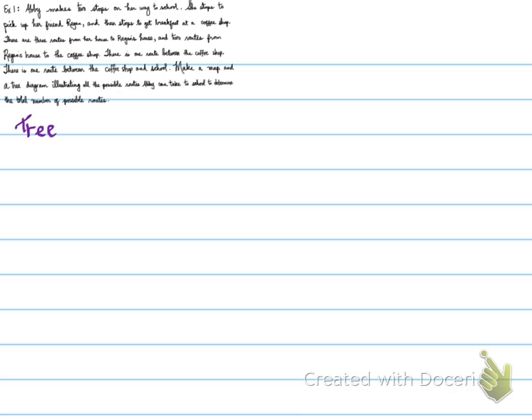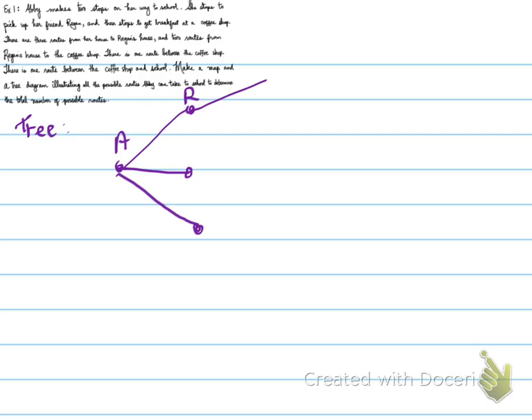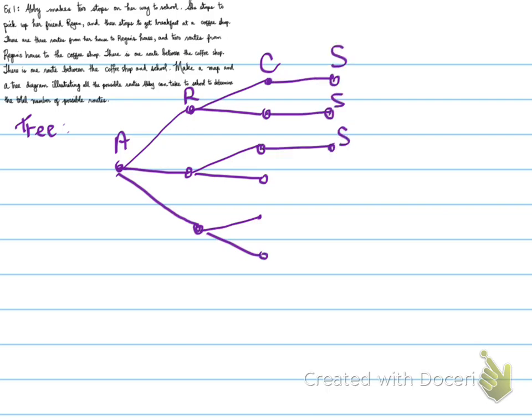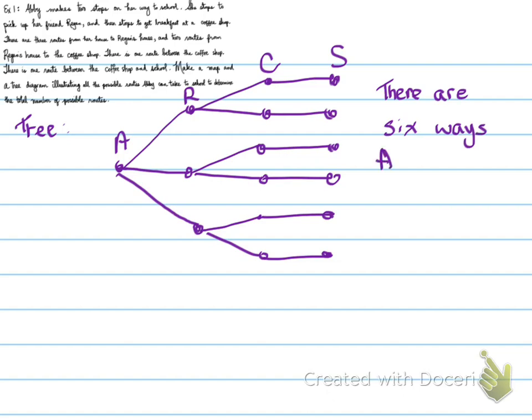Let's start with the tree diagram. Abby has three possible ways to get to Reagan's house. Then from Reagan's house, there are two possible ways to the coffee shop. And finally, from the coffee shop to school, there's one way. Therefore, there are exactly six routes — six ways Abby can take to school.